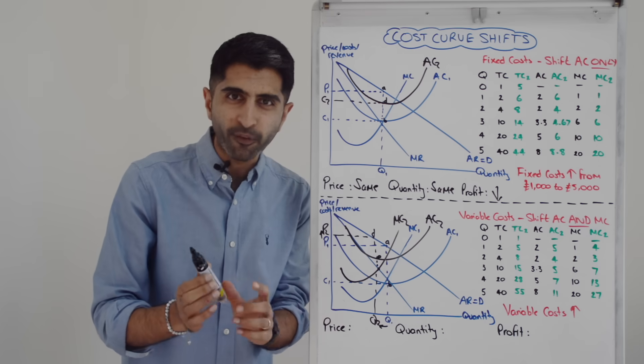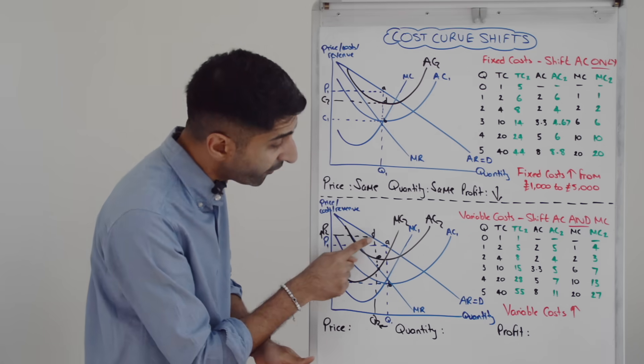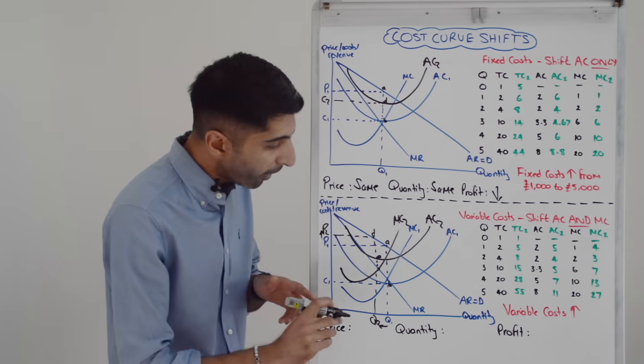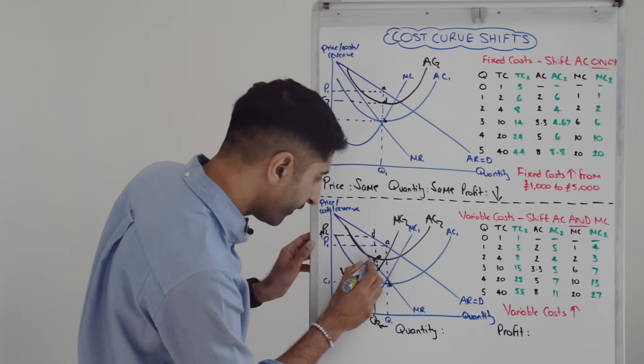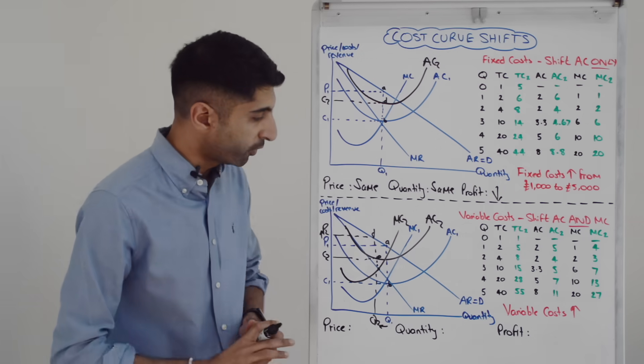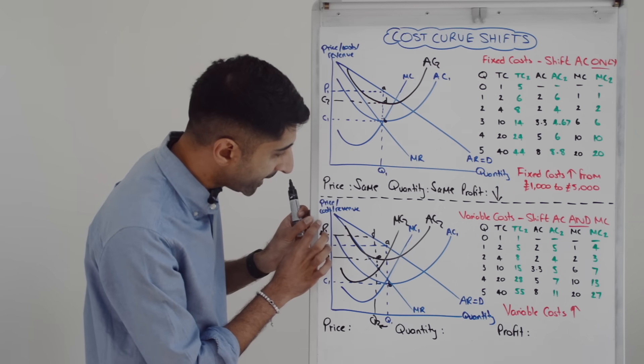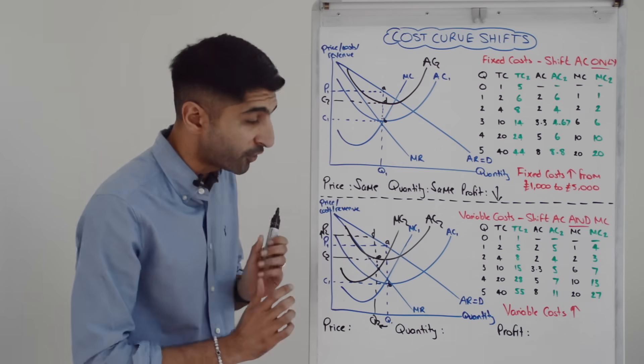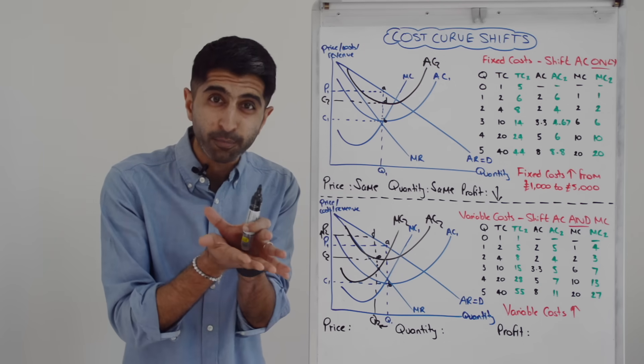Multiply that vertical distance by all of Q2. If we call this point here C2, we then have the new box of supernormal profit, which is the box P2, DEC2, which is clearly a lower level of profit than before.